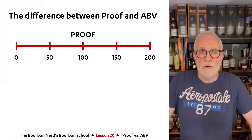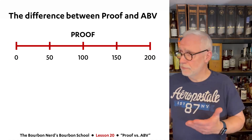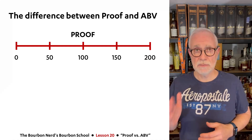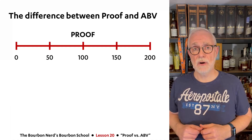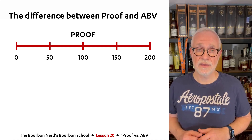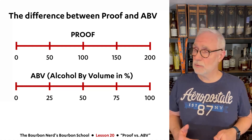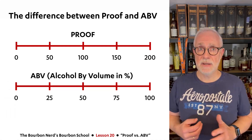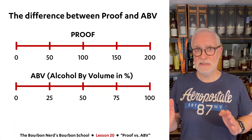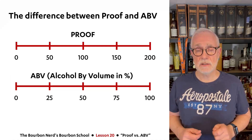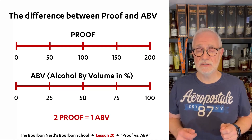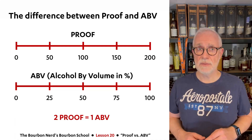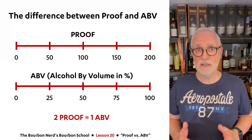So the difference between proof and ABV — it's actually pretty easy. Proof is a scale that goes from zero to 200, so 100 in the middle means that about half of all the liquid in the bottle is alcohol and the rest is water and other things. ABV, since it's a percentage scale, goes from zero to 100. Basically, two proof points equals one ABV. So if you have something that is 100 proof, it is 50% ABV. If you have something that is 120 proof, it is 60% ABV. Super easy to understand.